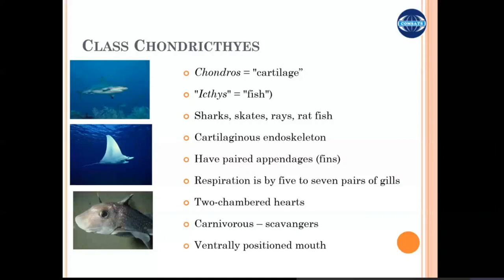Chondrichthyes are all fish which have a cartilaginous skeleton. Major examples are sharks, skates, rays, and ratfish. They have paired appendages, as seen in the figures, and they respire through pairs of gill slits.